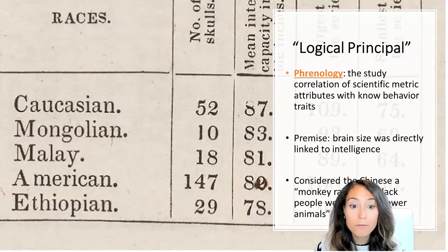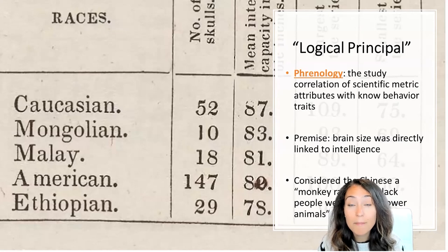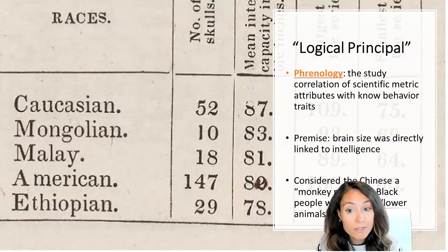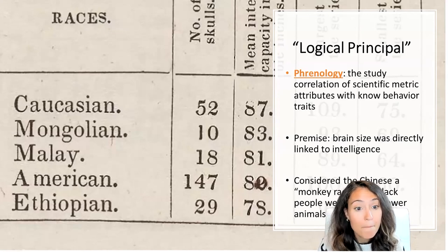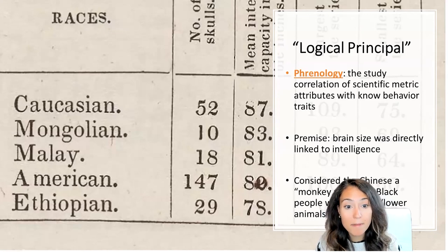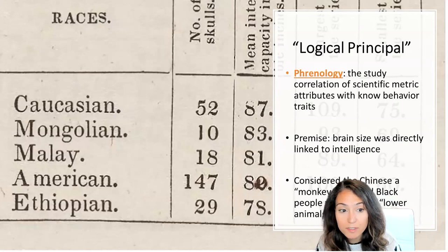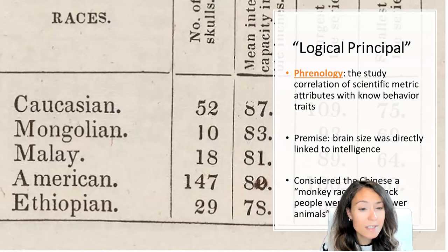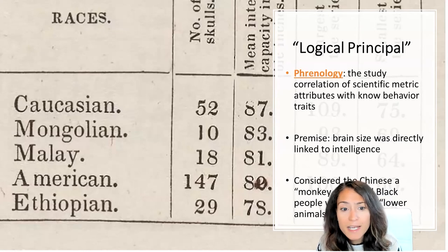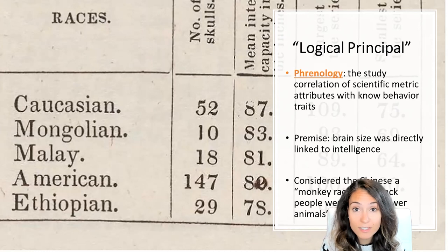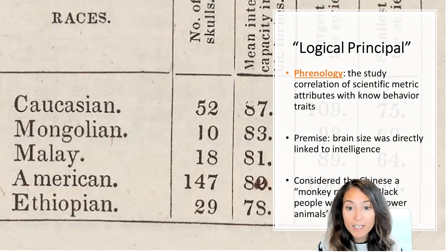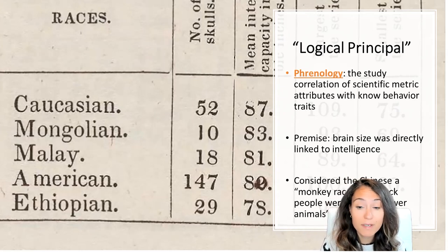Morton's colleagues around the world collected skulls for him, along with specific data about the individual's age, sex, race, and occupation, as well as personality traits. Morton used this data to compare their behaviors with metric attributes. The core assumption was that the brain size of an individual's skull was directly linked to intelligence, and these metrics provided a way of explaining why one race seemed to act differently from another.